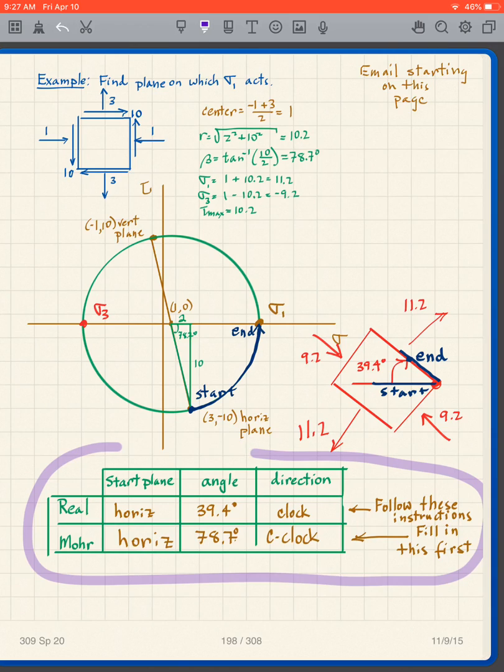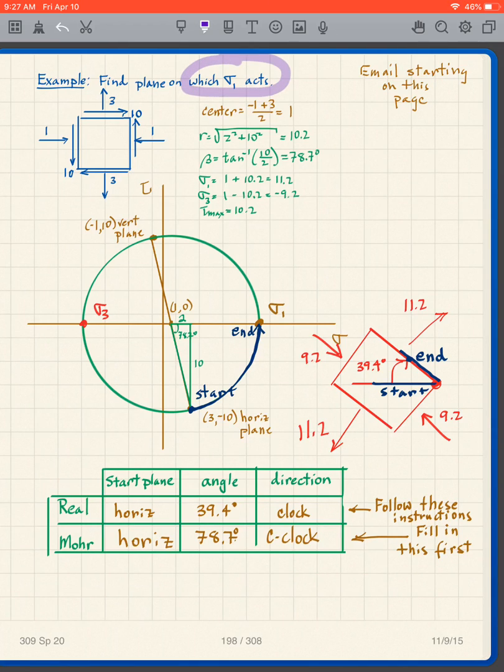I'm gonna use this table, but I'm gonna use it in a different way. Because my question is: what plane does sigma 1 act? I know the value of sigma 1 - that's easy to get by drawing the circle - which plane does it act on?